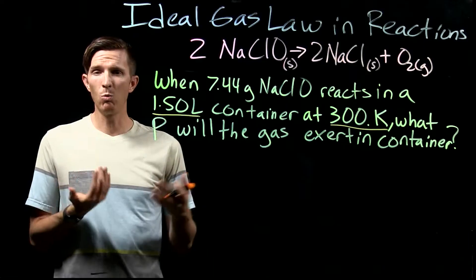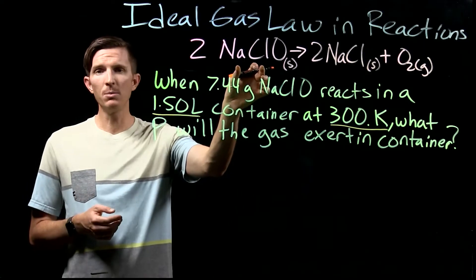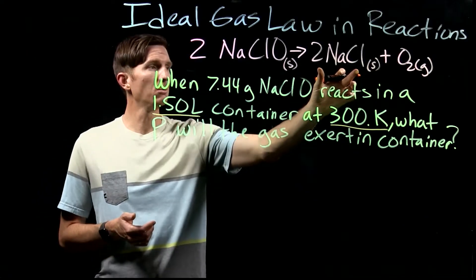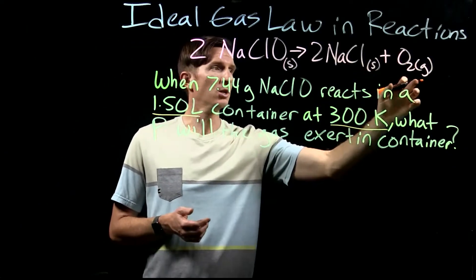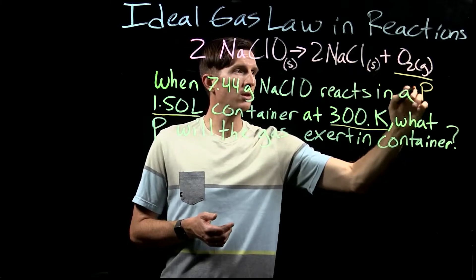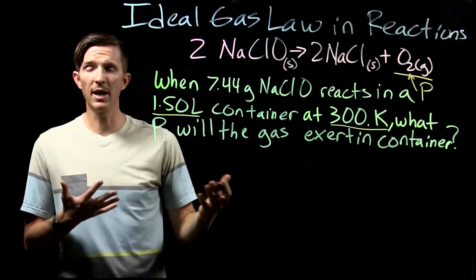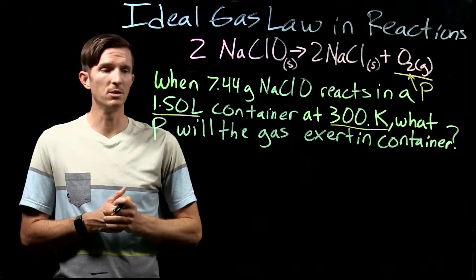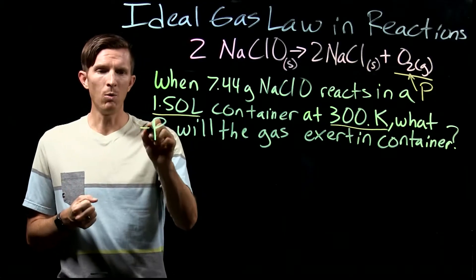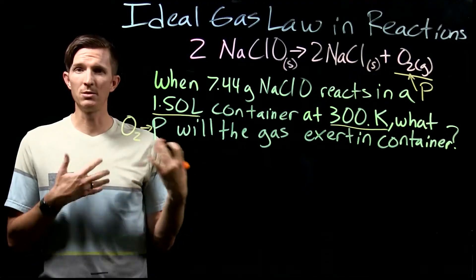Let's identify what's going to exert a pressure. Not our sodium hypochlorite — it's a solid. Not our product sodium chloride — it's also a solid. Just our oxygen gas. So that's what's going to exert a pressure. Our oxygen gas is going to exert a pressure when the reaction is done, and that's what we want to find.